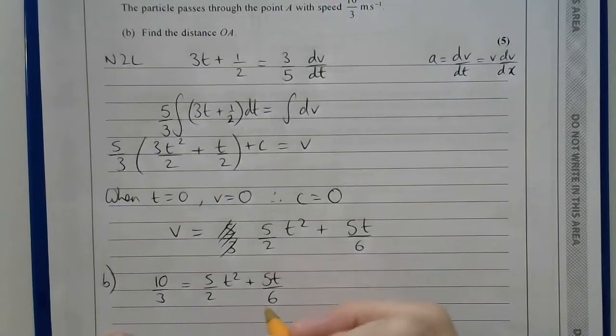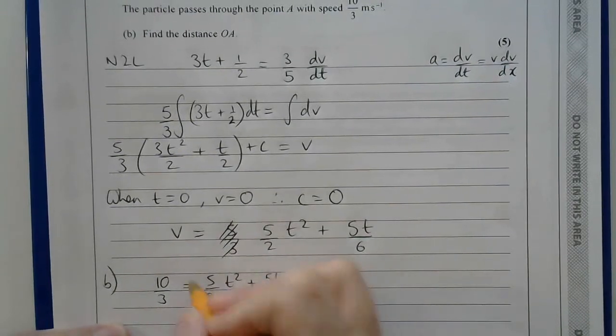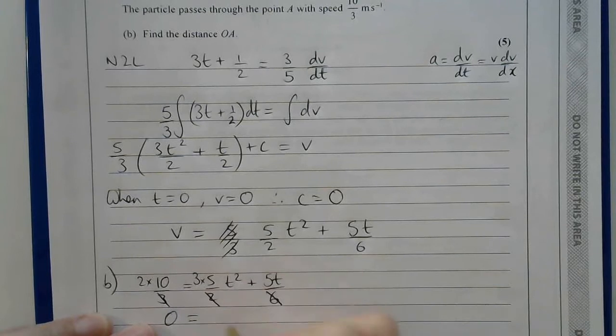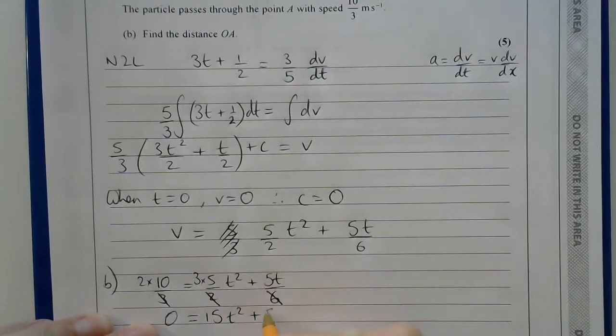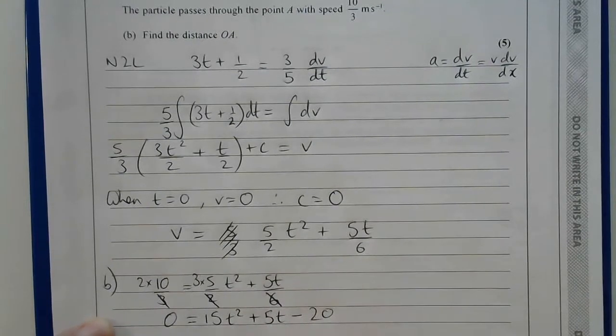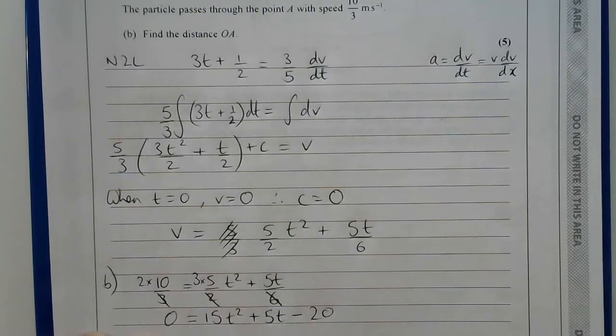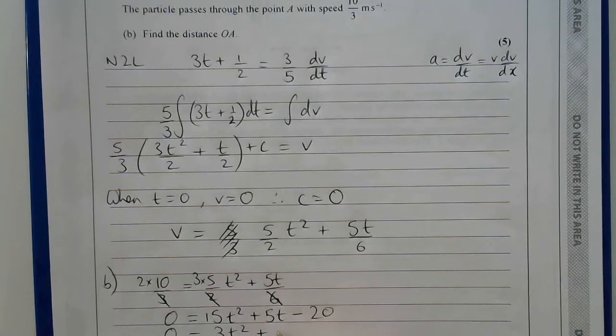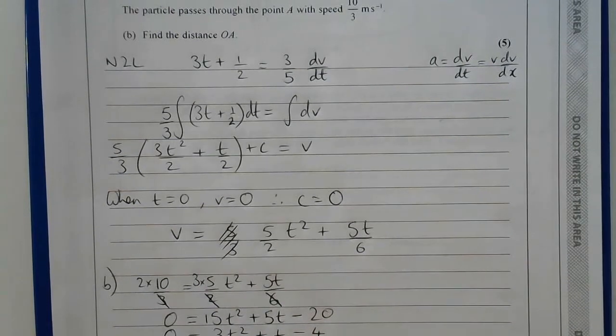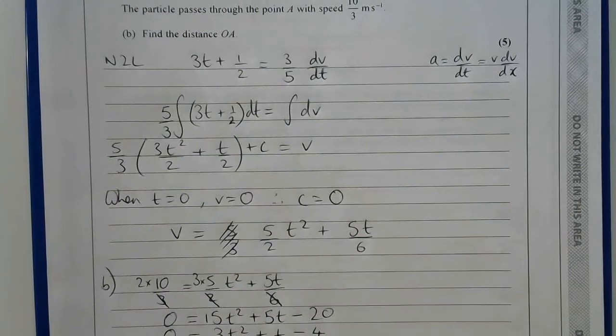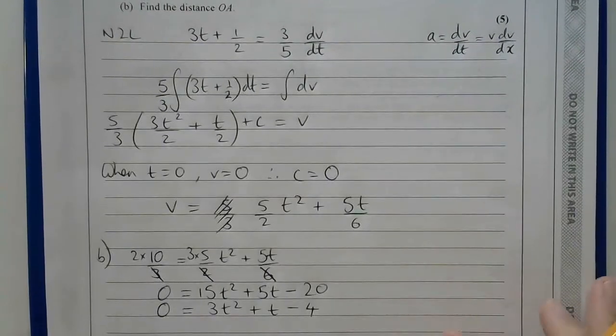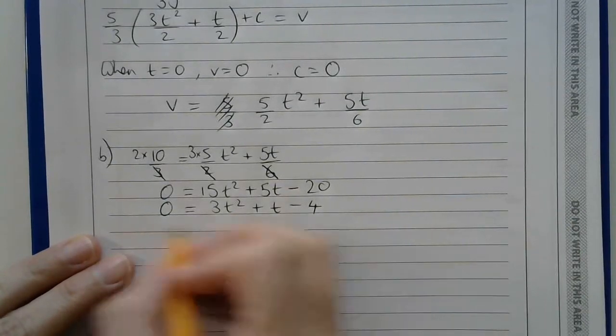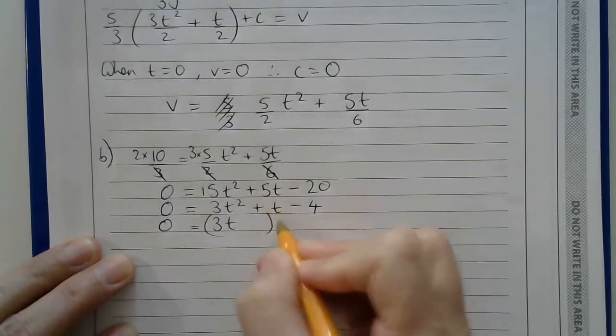For part b, first of all, I shall pop in this value of 10/3. So I get that 10/3 is equal to 5/2 t squared, plus 5t/6. And I'm trying to work out at what value of t does this work. So I can see I've got a quadratic equation. If I multiply everything by 6, that will go there, I'll be left with a 3, and here I'll be left with a 2.